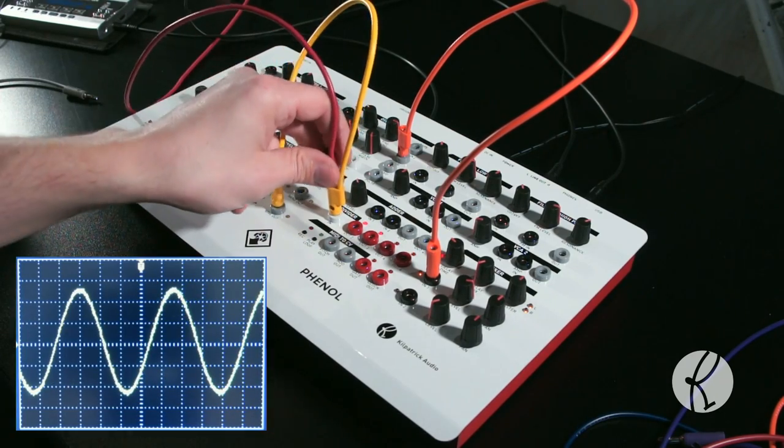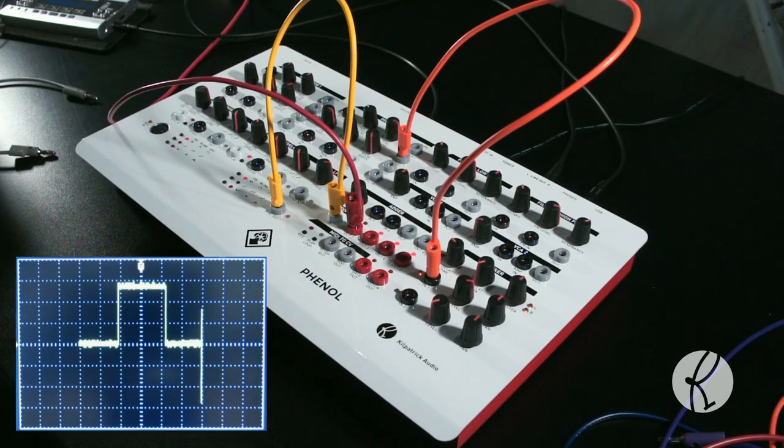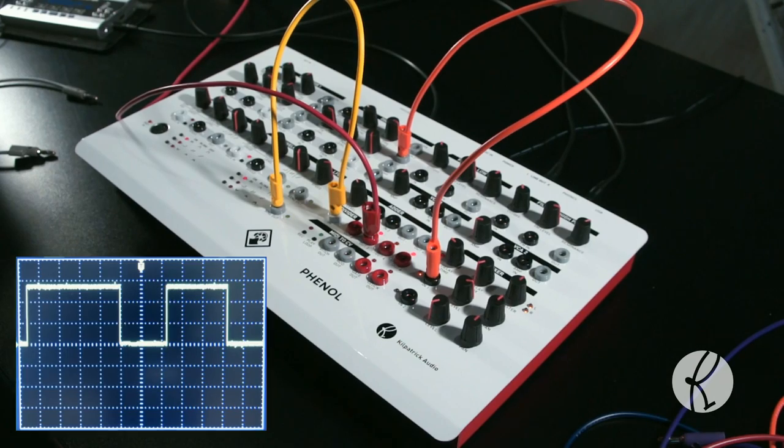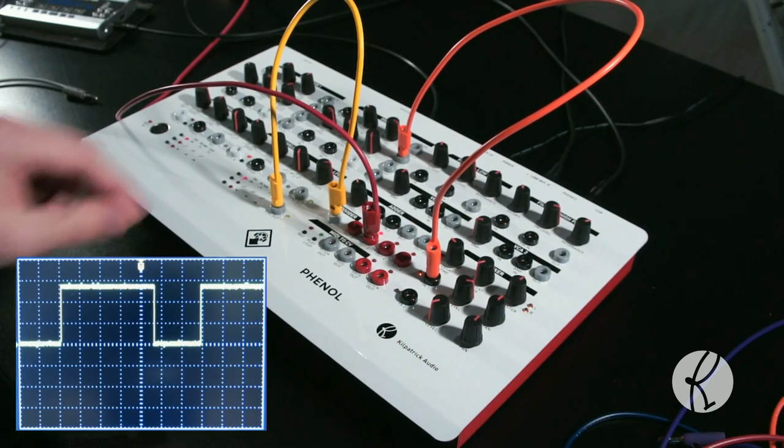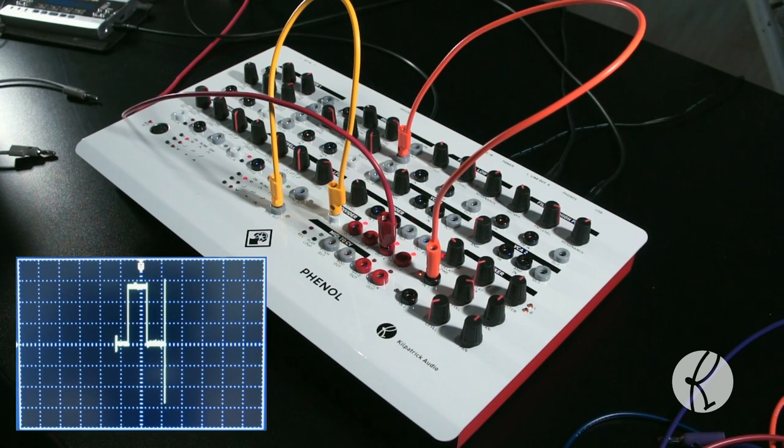Here we're feeding a low frequency sine wave signal from the LFO into the input. The divider counts the input transitions and creates divided versions of the input at the four outputs. All four outputs can be used at the same time.